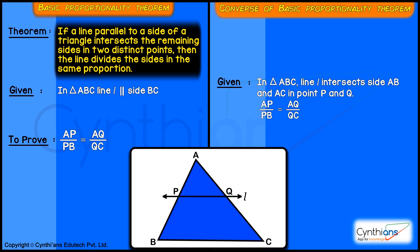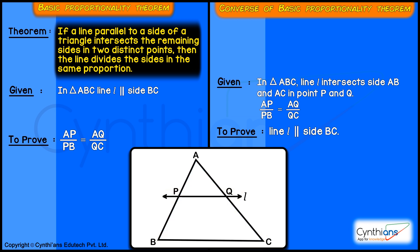We need to prove that this line, that is line L or segment PQ, is parallel to side BC. So now we have made the statement of the converse of the basic proportionality theorem. Let's see.